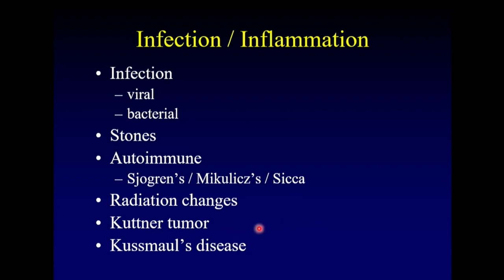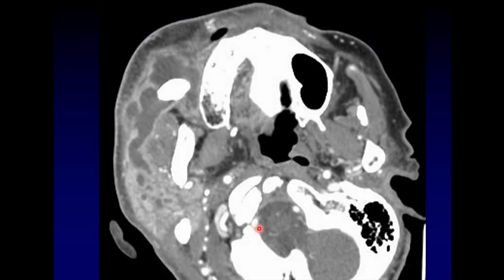Kuttner tumor is an IgG4-related disease — a chronic inflammatory disease that looks just like a tumor, but it's not, it's inflammatory. Küssmaul's disease is chronic obstruction of the ducts, which is a rare presentation. Here's a classic example of a large stone obstructing Stensen's duct, causing an abscess to form within the duct itself and extend back into the dilated ducts — a classic appearance for bacterial infection from sialolithiasis.